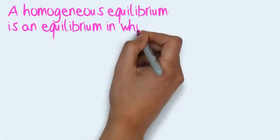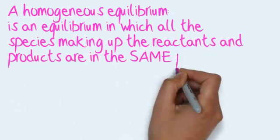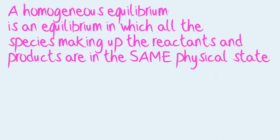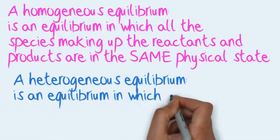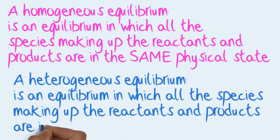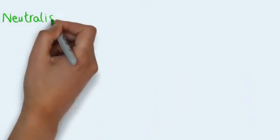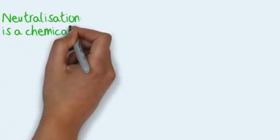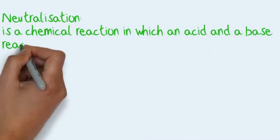A dynamic equilibrium exists in a closed system when the rate of the forward reaction is equal to the rate of the reverse reaction. A homogeneous equilibrium is an equilibrium in which all the species making up the reactants and products are in the same physical state. A heterogeneous equilibrium is an equilibrium in which all the species making up the reactants and products are in different physical states.